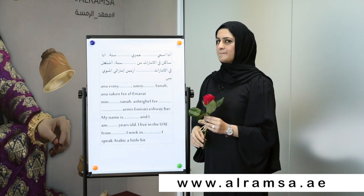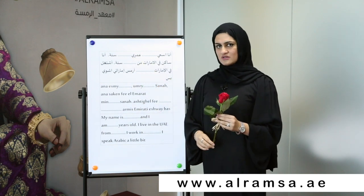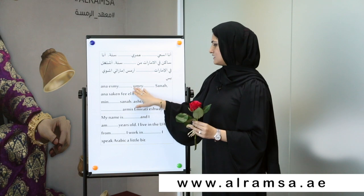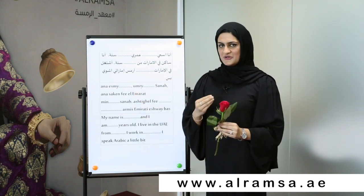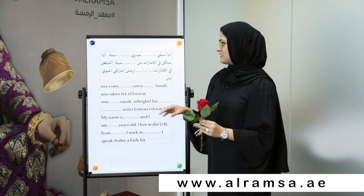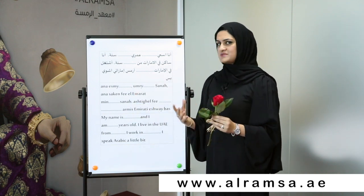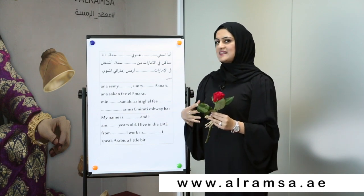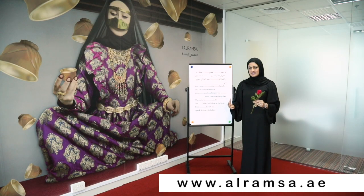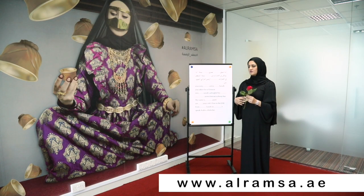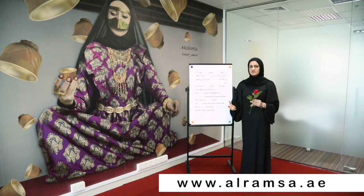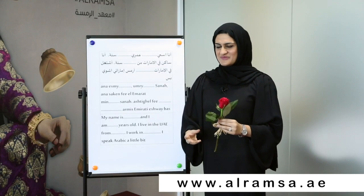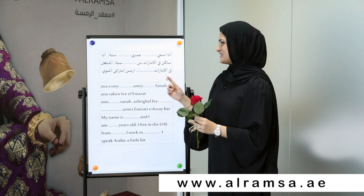عمري means my age. You can say خمسة وعشرين سنة — 25 years — or ثلاثين سنة, or أربعين سنة. You need to know your number, or at least your age, in Arabic.